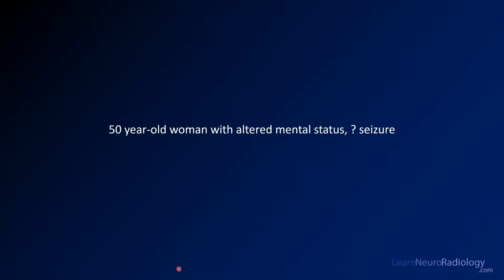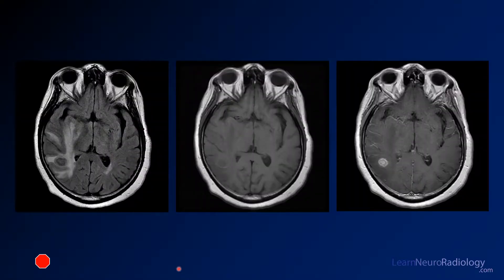Here we have a 50-year-old woman with altered mental status and questionable seizure. On MRI, the FLAIR shows an iso- to hypointense mass in the right temporal lobe with some surrounding edema. On pre-contrast T1, there may be a little thin rim suggesting hemorrhage, but not much. On post-contrast imaging, you see very avid enhancement.